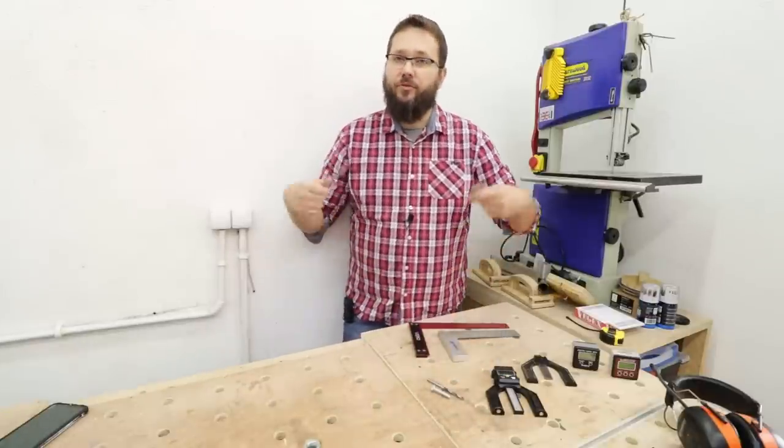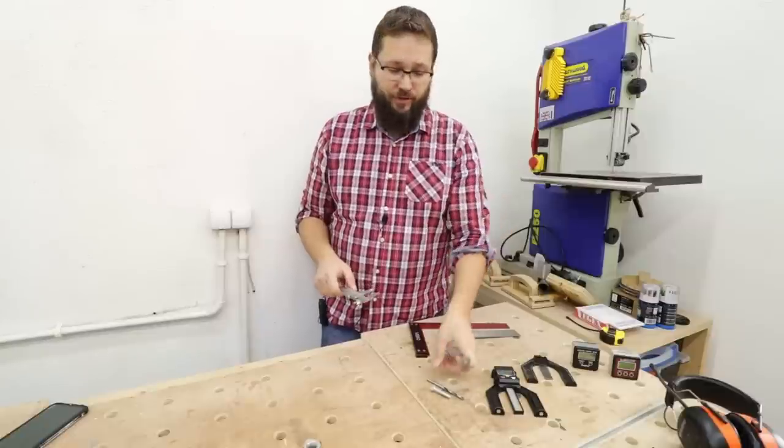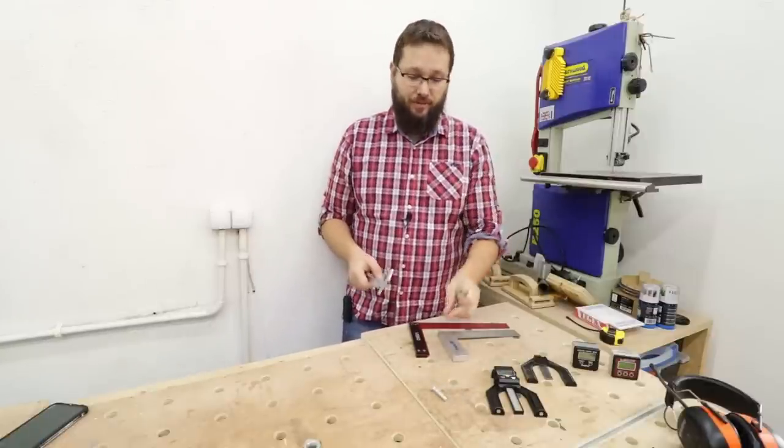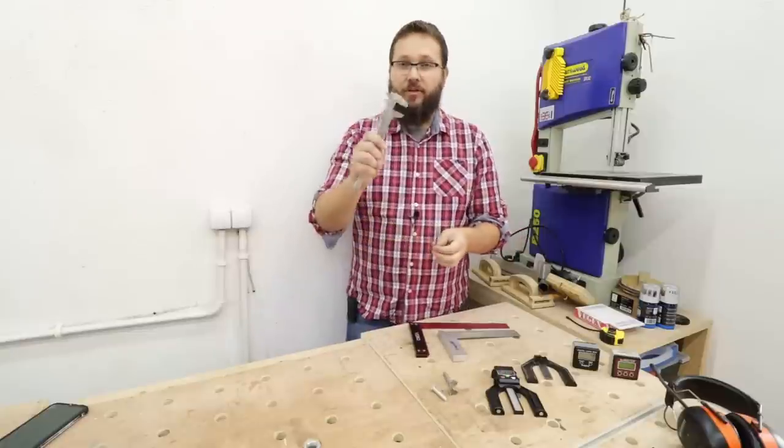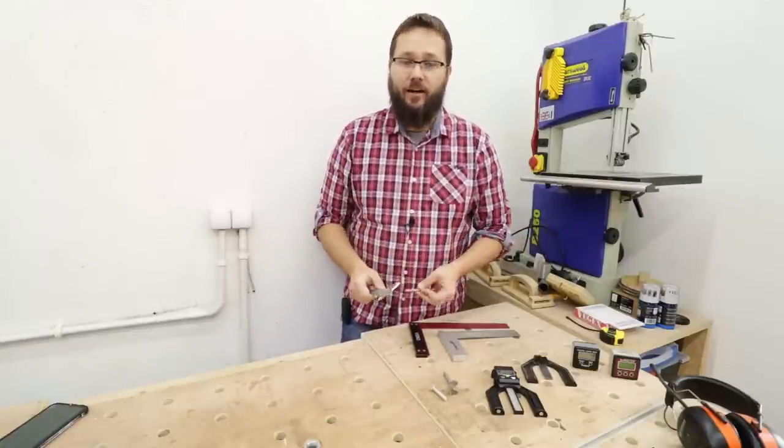Now for example, if you're not very organized like myself and you just drop your forstner bits or drill bits, and when you need a specific size, for example five millimeters, and you've got a bunch of them, you can use calipers to tell you exactly what diameter they are. Same with some bolts or screws, you can check them out, see exactly what size they are. Super useful and helpful tool.